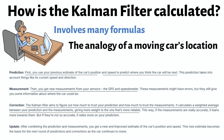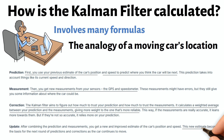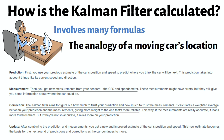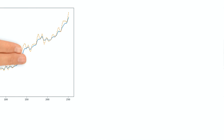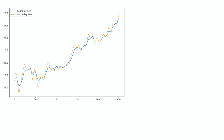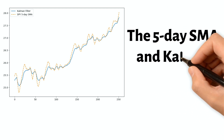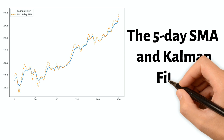Lastly, you update your estimate based on the weighted average you calculated, and this updated estimate becomes the basis for the next round of prediction and correction. Now let's show you the Kalman filter strategy. It is a mean reversion strategy that combines the five-day simple moving average and Kalman filter.